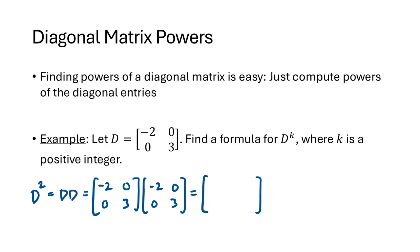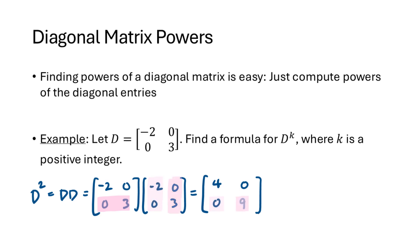We'll start with D squared. D squared means D times D, so in the normal way we go across the rows of the first matrix and down the columns of the second, multiplying and adding as we go, and we get the result 4, 0, 0, 9, which is in fact (-2)², 0, 0, 3².